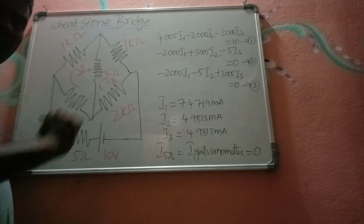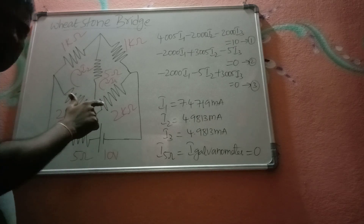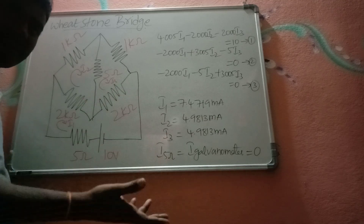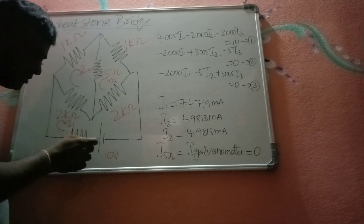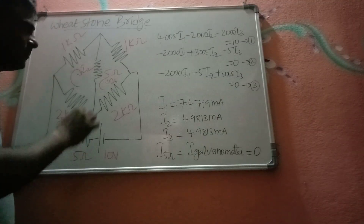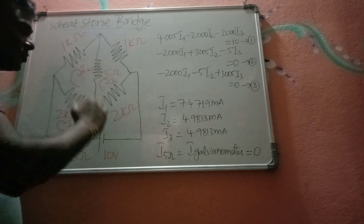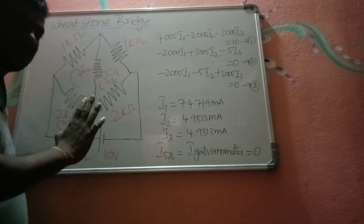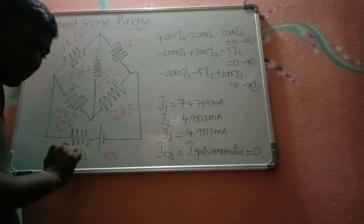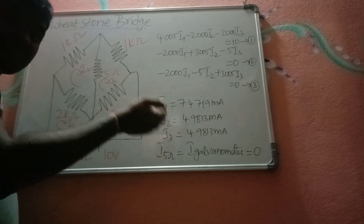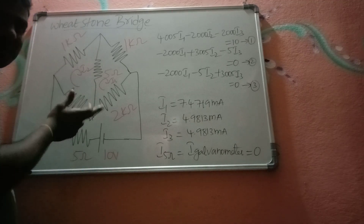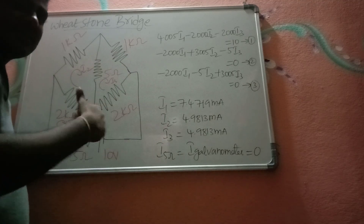In this Wheatstone bridge, there are four arms — two pairs of opposite arms. The internal resistance of the battery is represented as a series element, here 5 ohms. We also have a galvanometer between the two opposite ends. For this numerical example, I considered the galvanometer resistance as 5 ohms and the internal resistance of the battery also as 5 ohms. The arms are chosen such that the bridge is balanced. The condition for balance is that the product of any two opposite arms must equal the product of the remaining two arms.